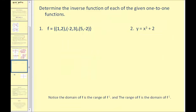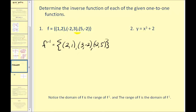Let's find some inverse functions. Here's a function that consists of three ordered pairs. The inverse function would just consist of the ordered pairs (2, 1), (3, -2), and (-2, 5). Notice how to form the inverse function: we interchange the x and y coordinates for each ordered pair. We were told the original functions are one-to-one, so we can proceed to find the inverse without further checking.